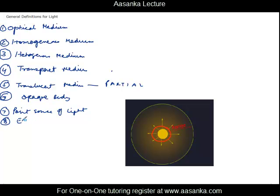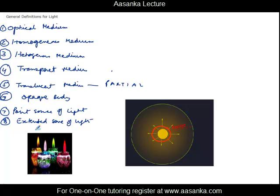However, when you are told about an extended source of light, that means the source may not be small. For example, candles with an elongated flame are called an extended source of light. In contrast, a true point source would be like a small dot.